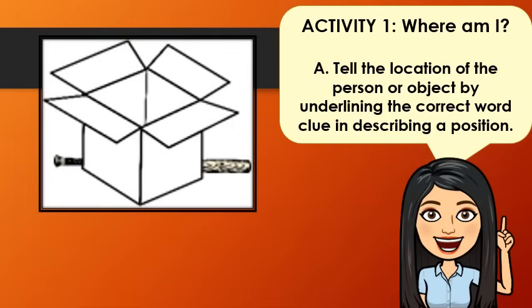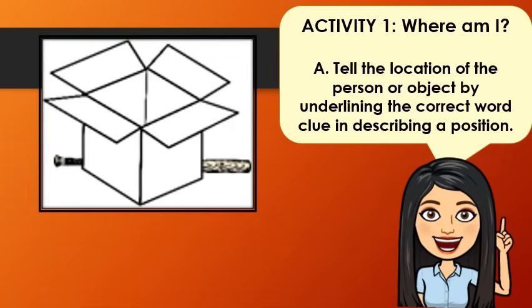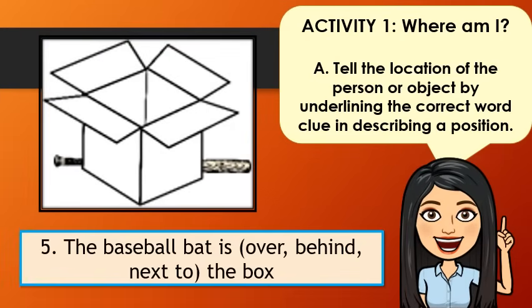Number 5: The baseball bat is over, behind, or next to the box.